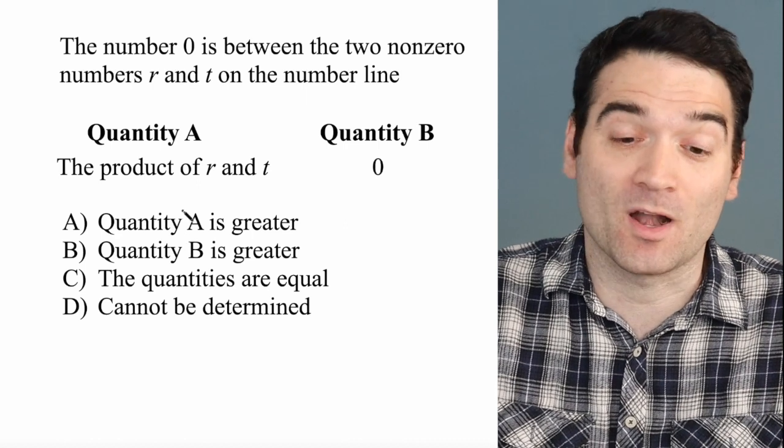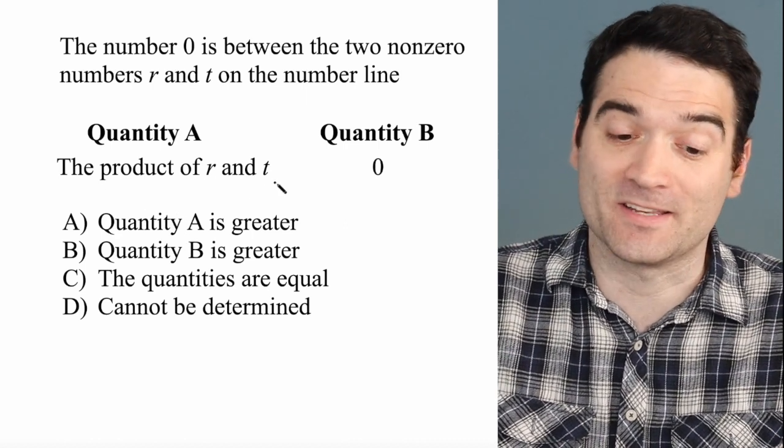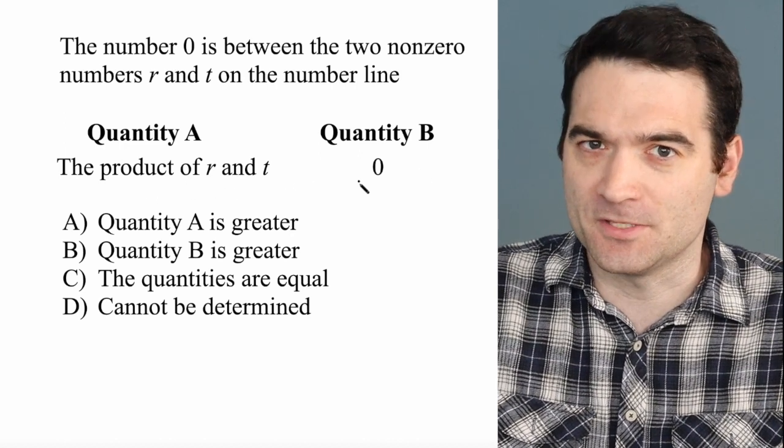It's quantitative comparison, so we want to know what's greater. Quantity A, the product of R and T—that's the multiplication of R and T—or Quantity B, the number 0.